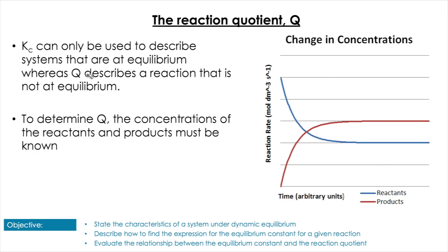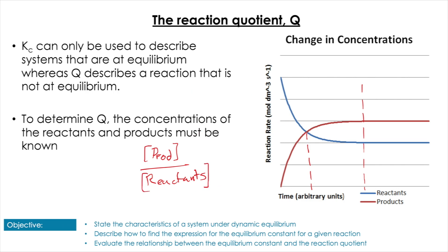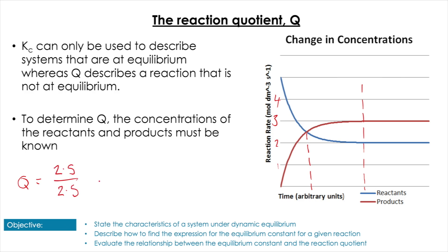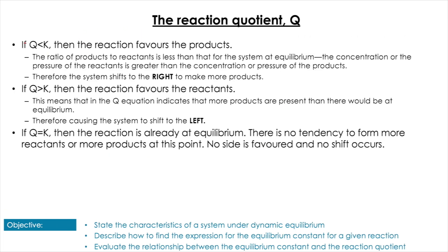Let's work through an example comparing Q and Kc using a graph. We pick one point where the two lines cross and one point after rates stay constant. Using concentration of products over reactants, labeling the graph 1 to 4 for easy values: for Q we get 2.5 divided by 2.5, and for Kc we get 3 divided by 2, which is 1.5. So in this case Kc is larger than Q.